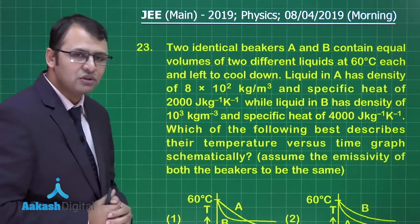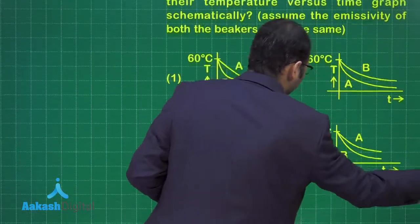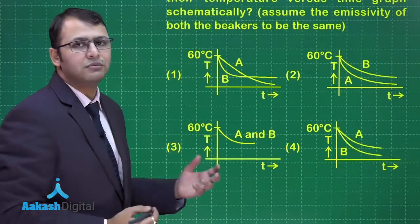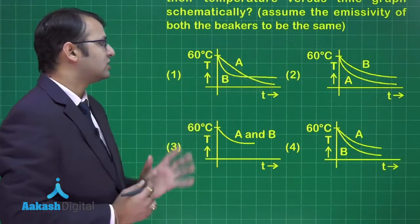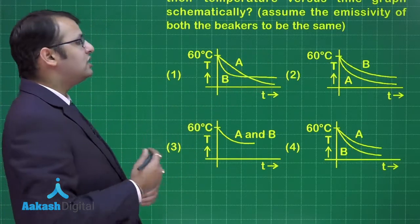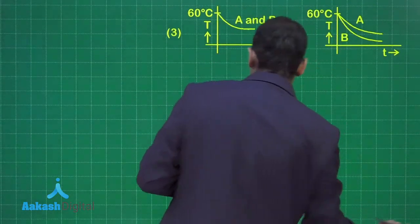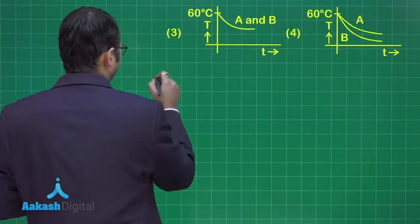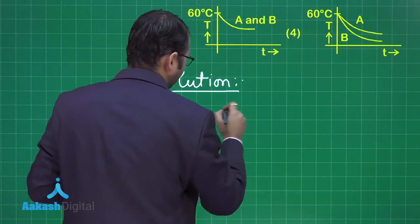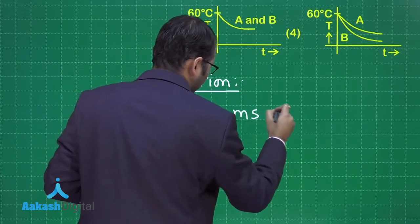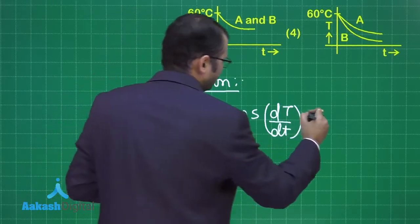Which of the following best describes their temperature versus time graph schematically? Let's see what graphs are given. Of these we have to find the best suited option. It's common that all will start from 60 degrees. Now we have to see the rate of cooling. To understand this, you must know the formula: heat loss, which is mS dT/dt equals eσAT⁴.